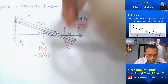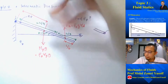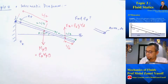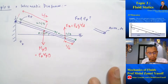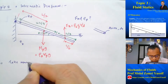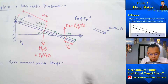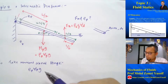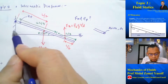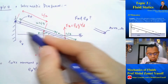The distance from the hinge to the centroid of the pole is L/2. Taking moments about the hinge, the clockwise moment equals ρ_pole × V_pole × g, multiplied by the perpendicular distance, which is L/2 × cos30.